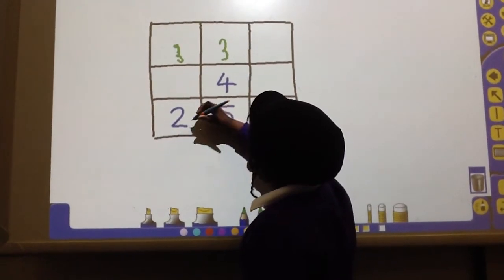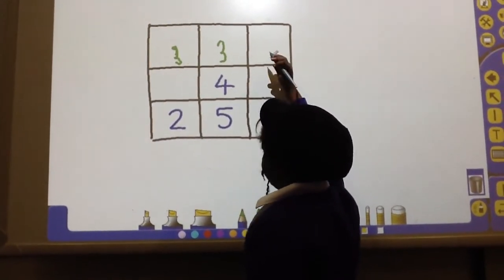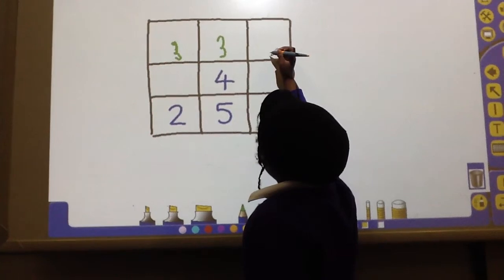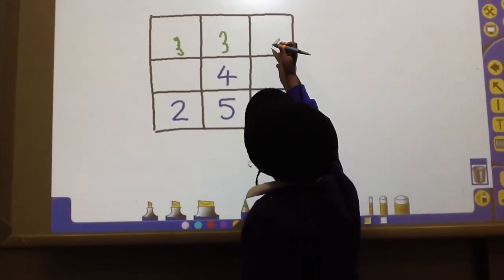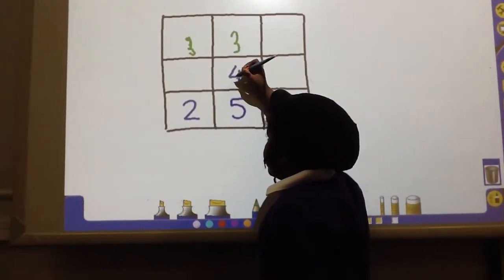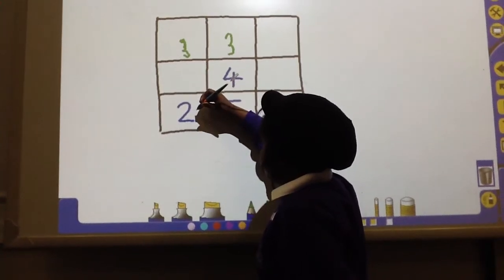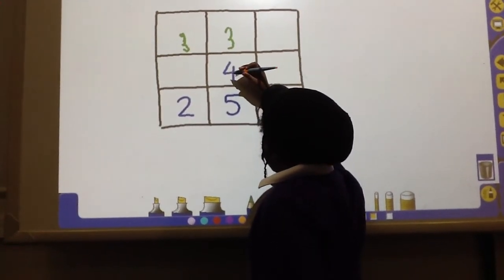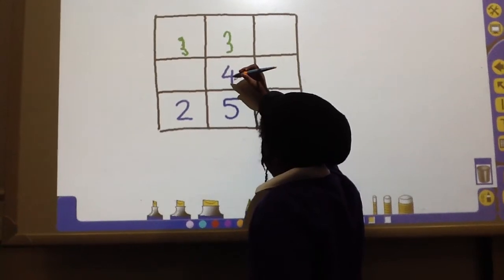And now you can go like this diagonal and then you've done the whole top line. So 4 plus 2 equals 6, so 6 plus 3 equals 12.